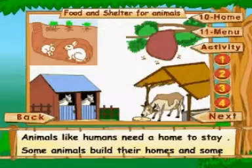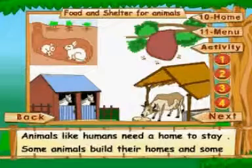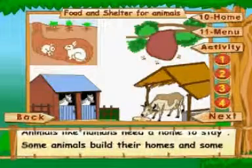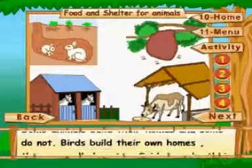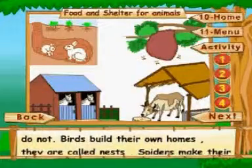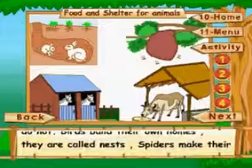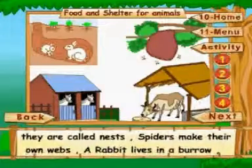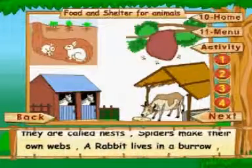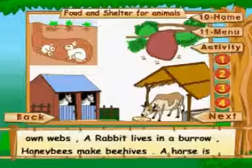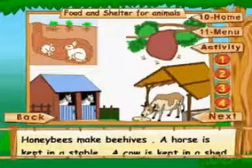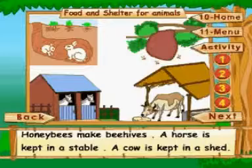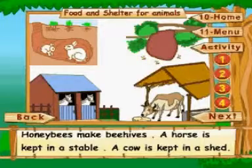Animals, like humans, need a home to stay. Some animals build their homes and some do not. Birds build their own homes, called nests. Spiders make their own webs. A rabbit lives in a burrow. Honeybees make beehives. A horse is kept in a stable. A cow is kept in a shed.